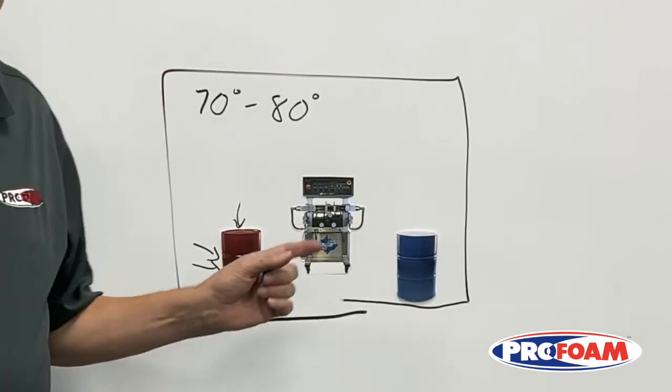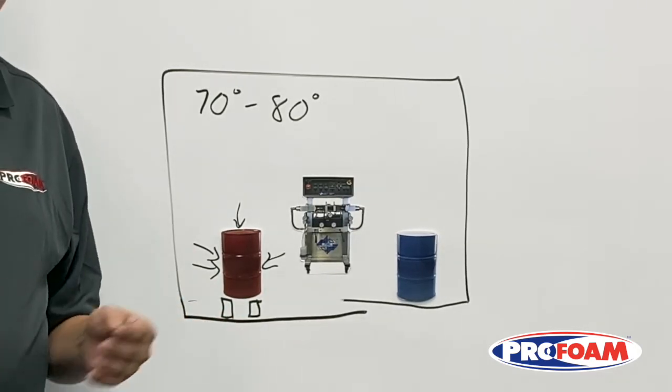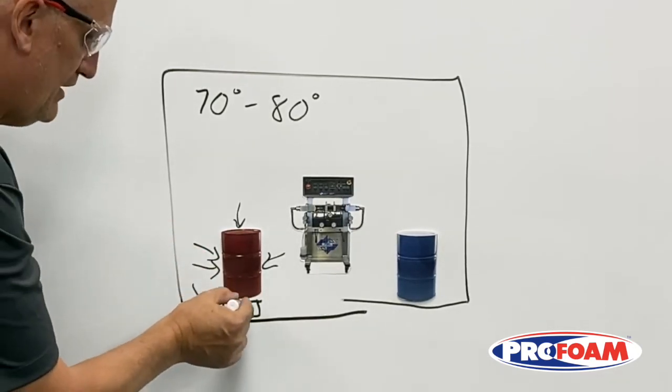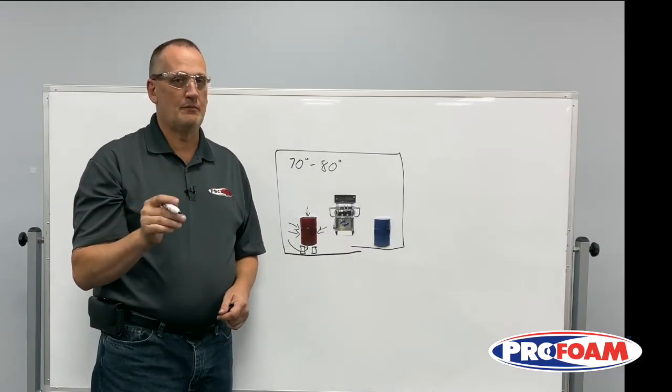Let's get the drum off the floor a little bit. Take some 2x4s and lay them down flat underneath those drums. That'll let that warm air go underneath and heat those drums from the bottom. That can make at least a 10 degree difference in the temperature of those drums.